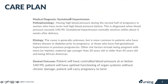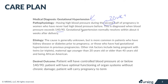For this care plan, our medical diagnosis is gestational hypertension. The pathophysiology is high blood pressure during the second half of pregnancy — the patient has to be over 20 weeks pregnant. If they are under 20 weeks, that patient would be a chronic hypertensive, not gestational. They have to be 20 weeks or more and have at least two blood pressures at 140 over 90. Hopefully this will resolve at about six weeks after delivery.